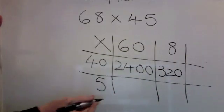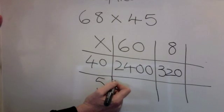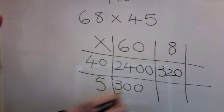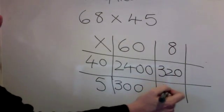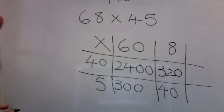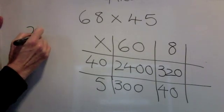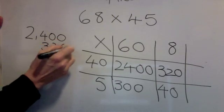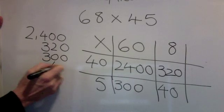5 times 6 is 30, one, zero. 5 times 8 is 40, no extra zeros. Now I need to add them together. 2,400, 320, 340.